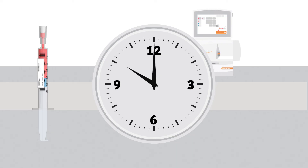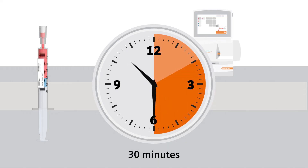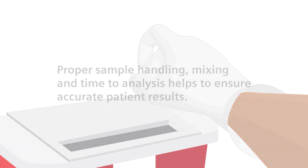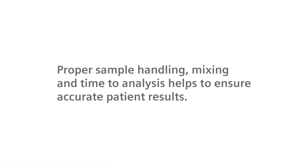According to the CLSI guidelines, blood gas testing should be completed within 10 minutes and not longer than 30 minutes after drawing the sample. If testing is delayed longer than 30 minutes, samples should be placed in an ice slurry and will require additional mixing prior to analysis. Dispose of the syringe according to the hospital guideline. Proper sample handling, mixing, and time to analysis helps to ensure accurate patient results.